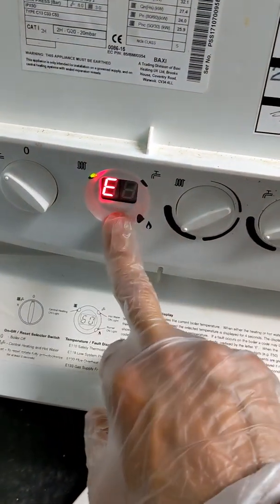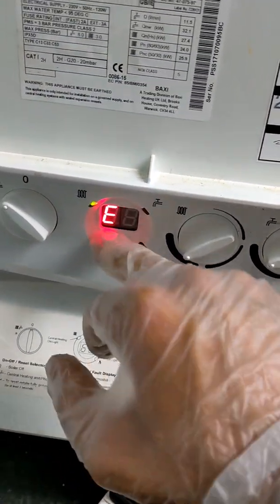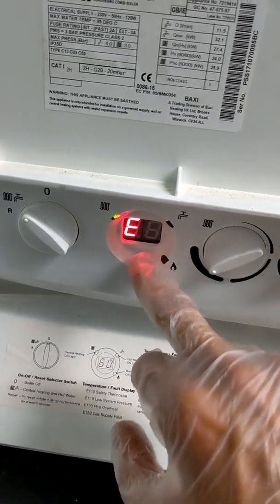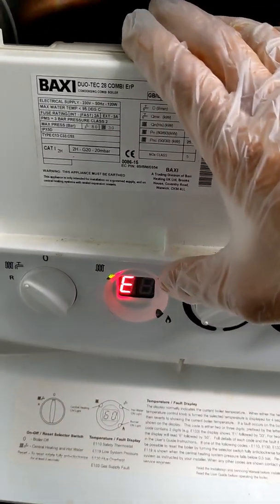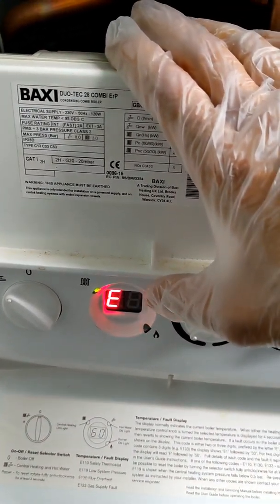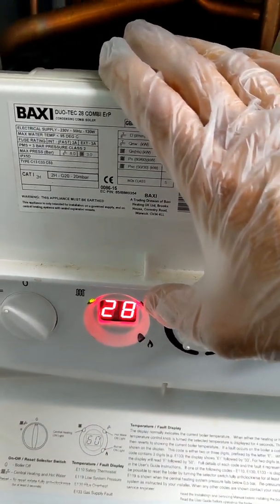Now, E28, although it says flow thermistor when speaking to Baxi tech, it actually means that it could be a fault related to any component. So the first thing we check is the X401 connection on the PCB to see if we've got continuity across it, which we didn't.